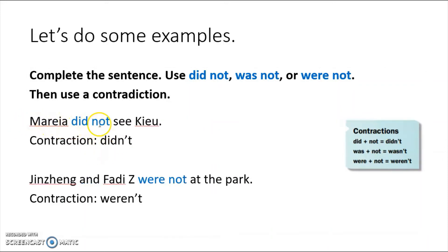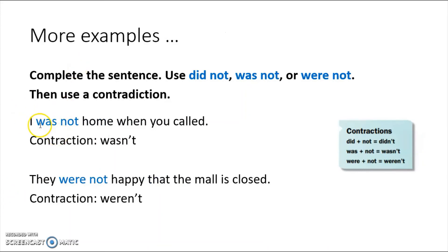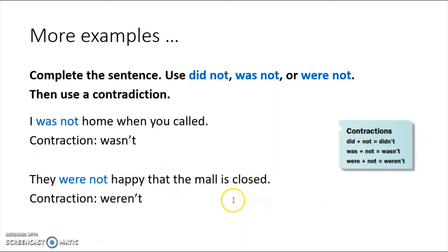Let's review: Maria did not see you — contraction: Maria didn't see you. Jin Jung and Fahri Zee were not at the park — two of them, so 'weren't': Jin Jung and Fahri Zee weren't at the park. I was not home when you called — contraction: I wasn't home. They were not happy that the mall is closed — contraction: they weren't happy.